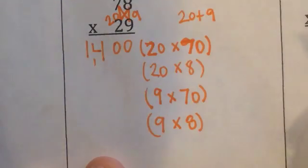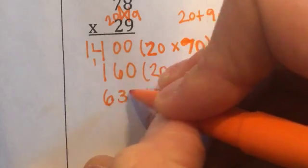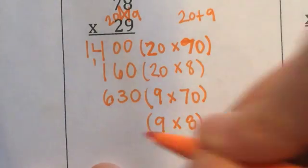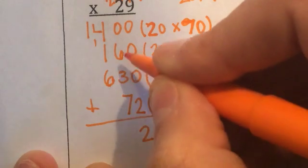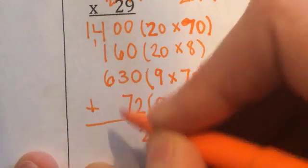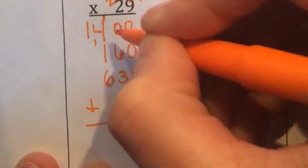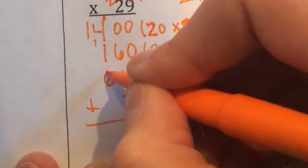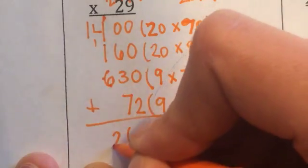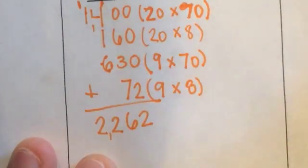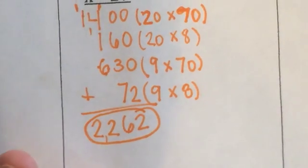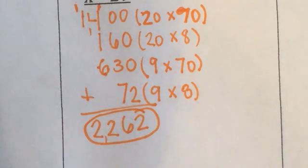You should have gotten: 1400 plus 160 plus 630 plus 72. Adding these up: 2 in the ones, then 7+6+3 is 16, write 6 carry 1, 1+1+6+4+1 is... 2262. If you got that, please clap your hands two times!